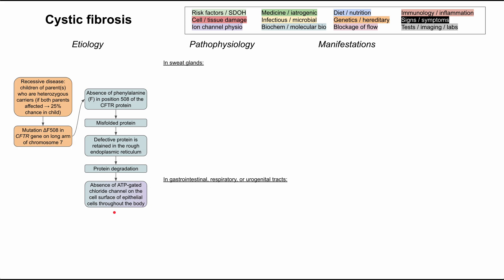The end result is manifestations throughout the body. It's worth knowing that the pathophysiology differs slightly in your sweat glands versus in your GI tract, your GU tract, and your respiratory tract. I'm going to break down the pathophysiology according to those two categories.